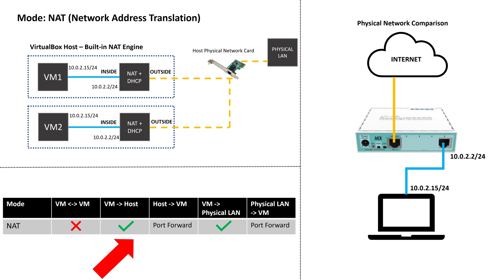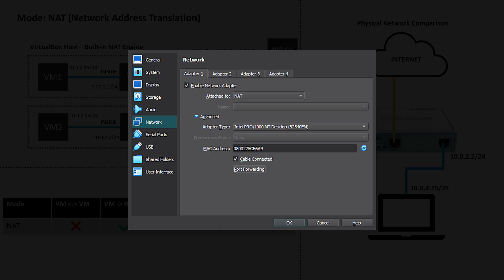The VM will, however, be able to communicate with your physical host computer and other devices on the physical LAN. If your physical host computer or another device needs to access the VM, you'll need to set up port forwarding. To show you what this looks like in terms of a physical network, this would be like taking a physical router, connecting one port to the internet, and connecting your computer to the LAN port. Your computer will receive an IP address from the router's DHCP server and the router will provide NAT services so you can access the internet. This network mode is useful if you want to quickly provide your VM with internet access and don't need to access any services running on the VM from outside networks.